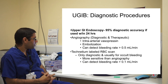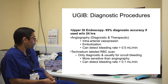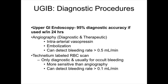The upper GI bleed diagnostic procedure performed is the OGD — upper GI endoscopy — which has 95% diagnostic accuracy if done within the first 24 hours. Other modalities if endoscopy has not shown a source include a CT angiogram, which is diagnostic, followed by a therapeutic angiogram once the bleeding source has been identified. Interventional radiology can help with embolisation if upper GI endoscopy cannot control the bleed. CT angiogram or angiogram can detect a bleeding rate of more than 0.5 mls per minute, so the patient must have active bleeding for these tests to pick it up.